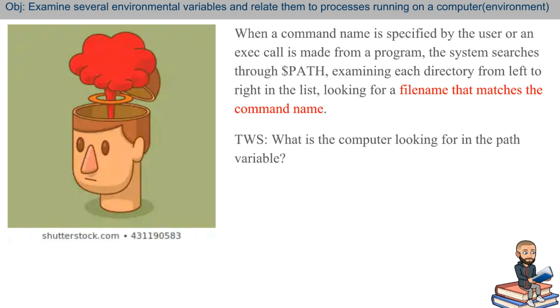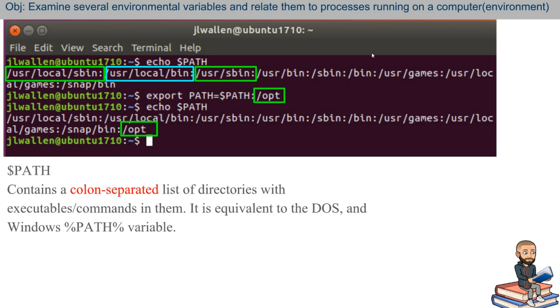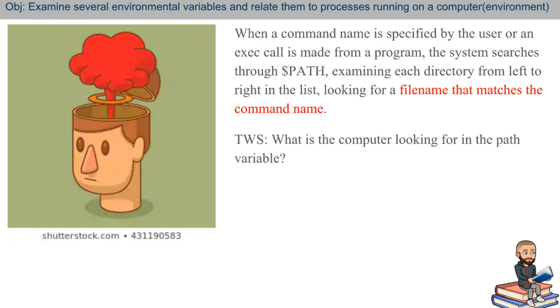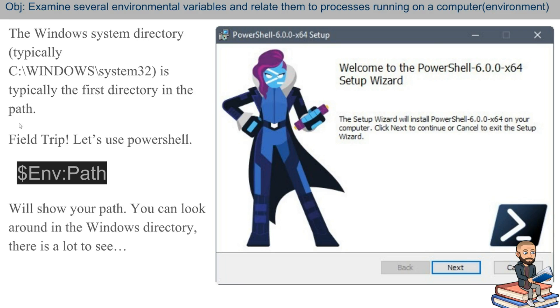Okay, so when a command name is specified by the user or an execution call is made from a program, the system searches through path and it examines each directory. You saw all those directories I spit out. Well, they're usually not that complicated. They're usually smaller like this. I'll show you mine on my virtual machine here in just a second. So the system searches through the path, examining each directory, interestingly, from left to right. It's looking for a file name that matches the command name. When I learned about this, it was mind-blowing. And so let's go ahead and see this in use.